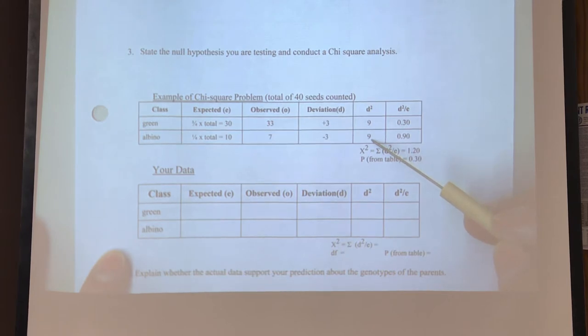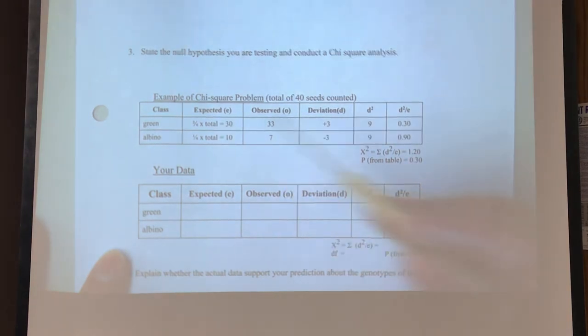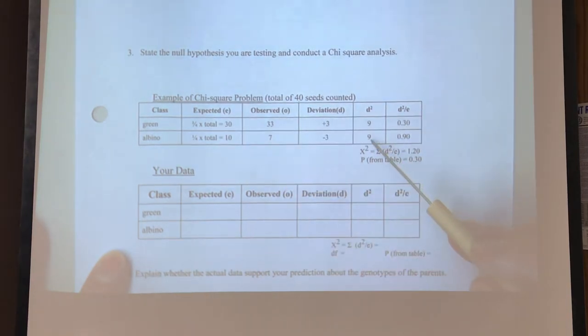The negatives cancel out. The next column, what we're going to do is we're going to take our deviation squared divided by the expected, okay? So 9 divided by 30 is 0.3, and then 9 divided by 10 here is 0.9. So our chi-squared equals our summation of our deviation squared divided by expected column. So you're just going to add those two together. So 0.3 plus 0.9 equals 1.2.